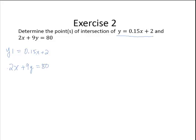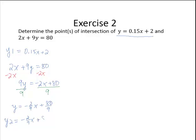I will subtract 2x from both sides. So then 9y is equal to negative 2x plus 80, and dividing by 9, I will write that as y equals negative 2 ninths x plus 80 ninths. And so I will call my y2 negative 2 ninths x plus 80 ninths.